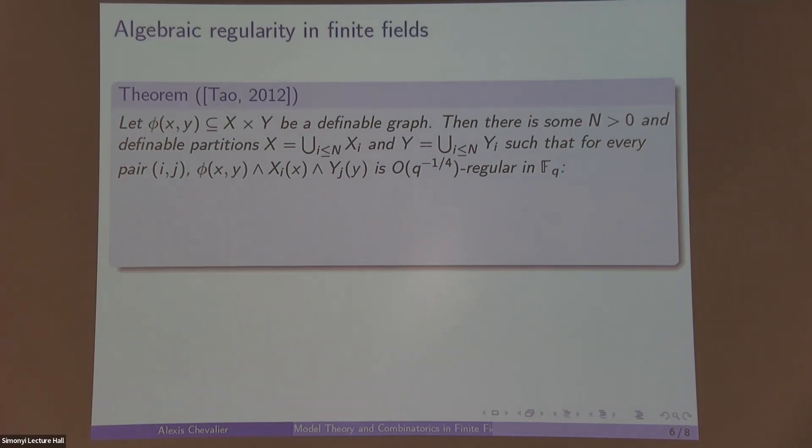Okay, and what does it mean to be regular with the error q^(-1/4)? This means that for any subset A of X_i, B of Y_j, the size of φ restricted to A × B is roughly what you would expect if φ was random. So it's the fraction of A × B over X_i × Y_j times the size of the total induced subgraph, and the error rate is q^(t-1/4).